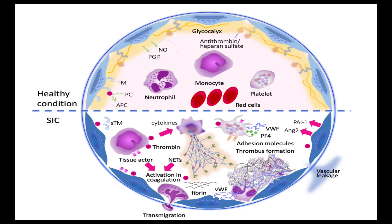In a healthy state, vascular endothelial cells keep blood flow smooth by producing substances like nitric oxide and prostaglandin I2, which prevent clotting. The endothelial surface also uses systems like antithrombin and thrombomodulin to maintain this antithrombogenic environment. However, in sepsis-induced coagulopathy, this balance is disrupted. Monocytes release tissue factor, triggering the extrinsic coagulation cascade, while exposed collagen under the damaged endothelium starts the intrinsic pathway.